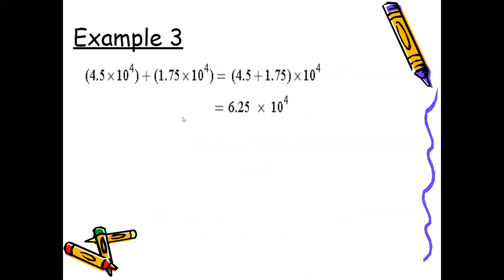Example three: same process — first check the exponent, which is 10 to the fourth power for both. Go ahead and add the coefficients or decimals. You can align the decimals manually or use a calculator. The final answer is 6.25, which is already in scientific notation form, so bring down the exponent: 6.25 times 10 to the fourth power.